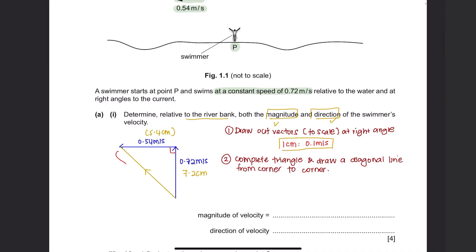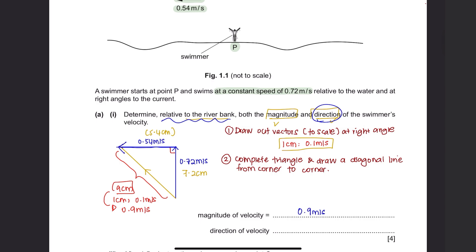If you have drawn this to scale, you can measure the resultant with a ruler, which will give you 9 cm. Since 1 cm equals 0.1 meters per second, 9 cm gives a magnitude of 0.9 meters per second. To find the direction, you need to find the angle the swimmer moves relative to the riverbank. You can place your protractor accordingly and get an angle of 53 degrees, or use trigonometry to get theta, which is approximately 53 degrees.